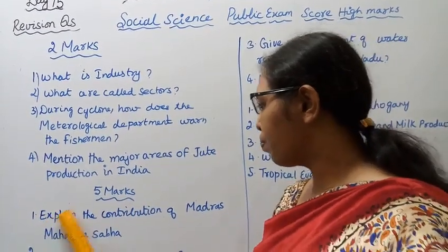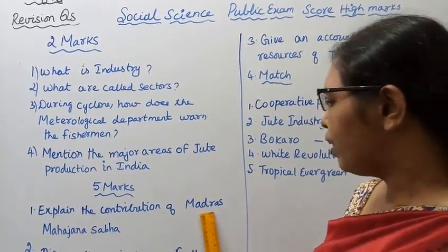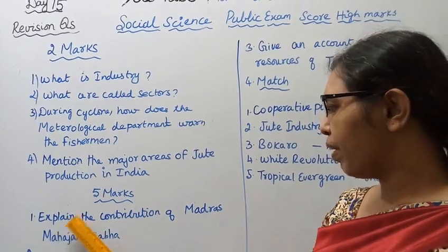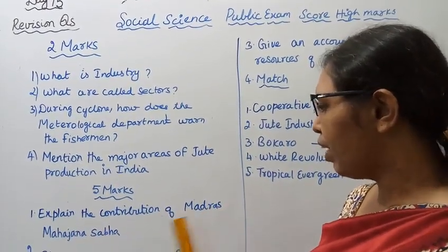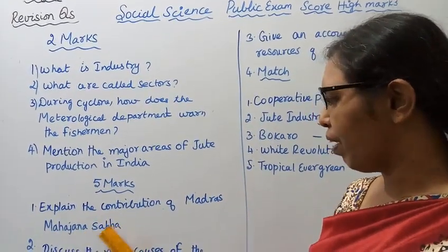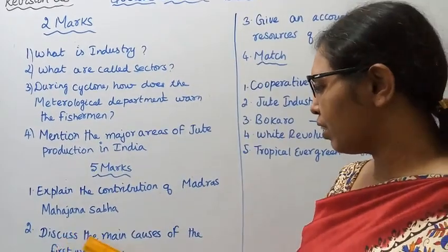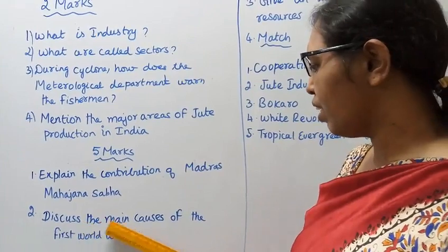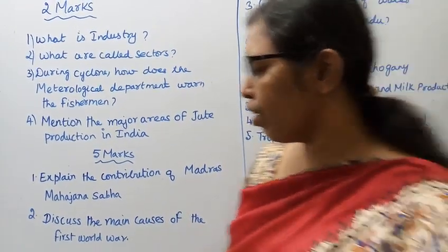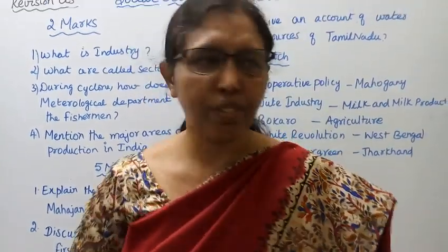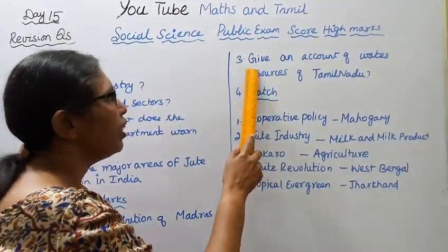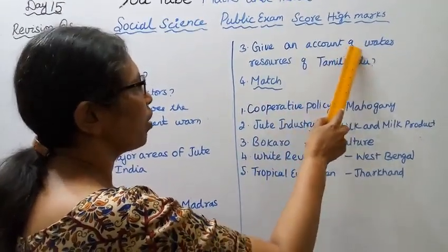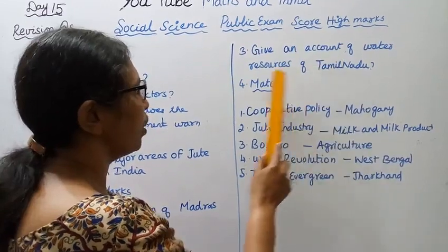Five marks. First: Explain the contribution of Madras Mahajana Sabha. Second: Discuss the main causes of the First World War. Third: Give an account of water resources of Tamil Nadu.